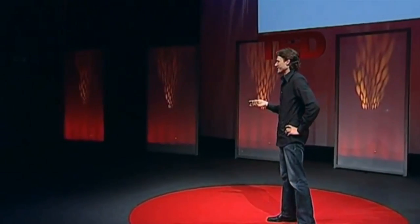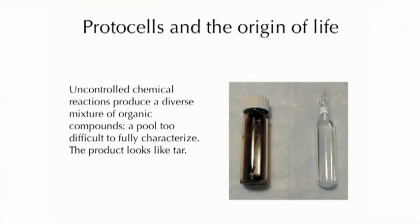Since we can make interesting protocells with interesting colors and behaviors that are very easy to make and have interesting lifelike properties, perhaps these protocells have something to tell us about the origin of life on Earth. Perhaps these represent an easily accessible step — one of the first steps by which life got started on the early Earth. Certainly, there were molecules present on the early Earth, but they wouldn't have been the pure compounds we worked with in the lab. Rather, they'd be a really complex mixture of all kinds of stuff, because uncontrolled chemical reactions produce a diverse mixture of organic compounds — think of it like a primordial ooze, a pool that's too difficult to fully characterize even by modern methods.